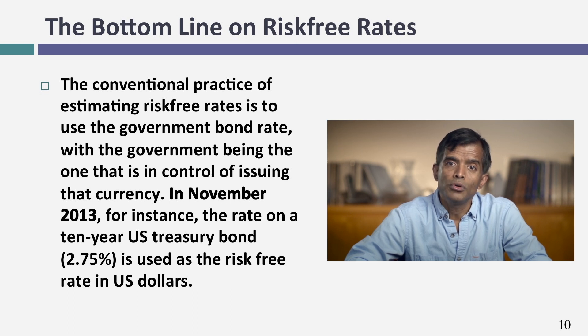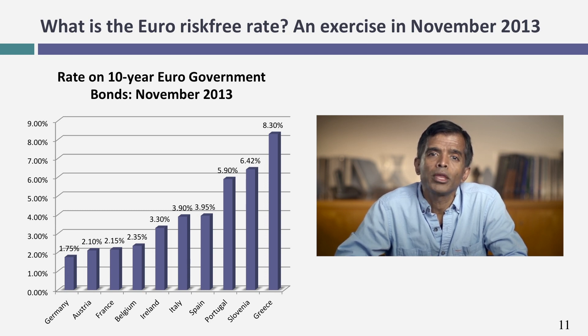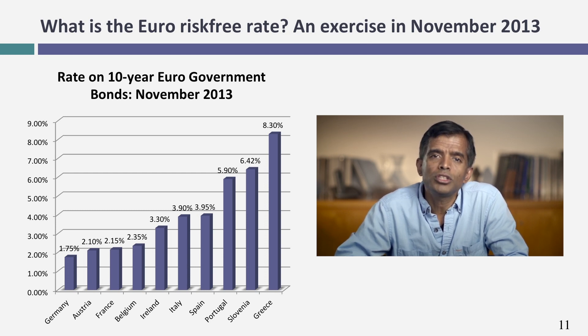The risk-free rate in U.S. dollars, assuming the U.S. Treasury is default-free, is 2.75%. Now let's climb the difficulty ladder. If I want a risk-free rate in euros — say, to compute the Deutsche Bank hurdle rate — I looked up 10-year government bond rates in euros and ran into a problem. There were at least 10 governments with 10-year bonds denominated in euros, and the rates were all different, ranging from 1.75% for Germany to much higher rates for Spain, Portugal, and Greece, which are riskier parts of the EU.